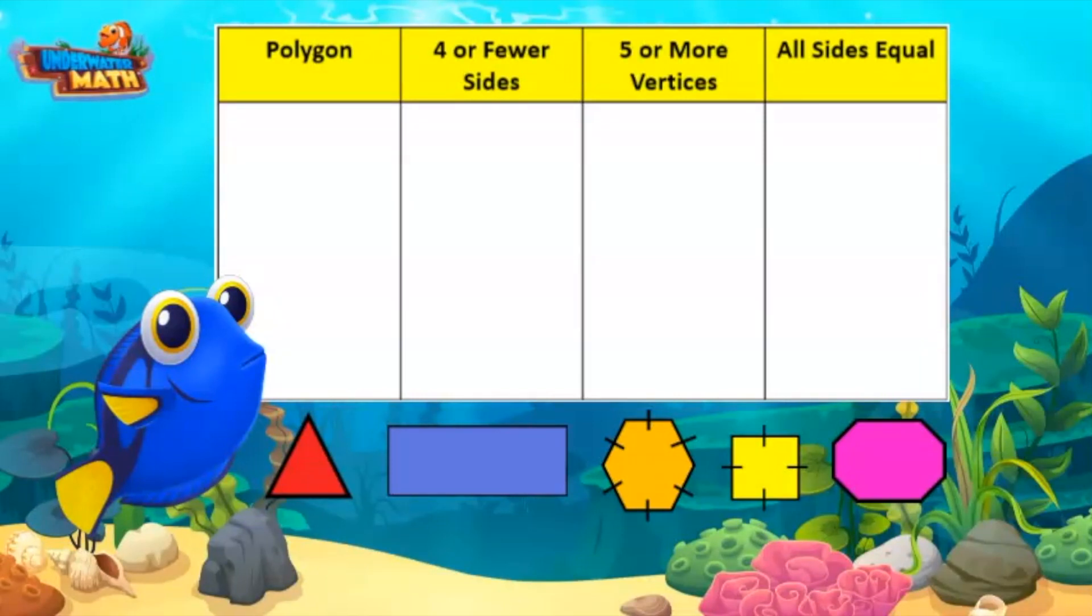Look at the table shown. We're going to categorize each figure by the headings shown, starting with the triangle. A triangle is a polygon because it has straight sides, is closed, and the sides do not cross paths. The next heading says four or fewer sides. A triangle has three sides, so it fits in this category.